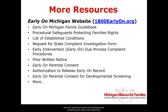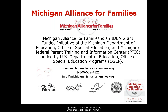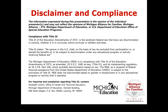Michigan Alliance for Families is an IDEA grant-funded initiative of the Michigan Department of Education Office of Special Education, and is Michigan's federally funded Parent Training and Information Center funded by the U.S. Department of Education Office of Special Education Programs. Follow-up questions to this webinar can be directed to us at info@michiganallianceforfamilies.org or call our 800 number: 1-800-552-4821. Thank you.